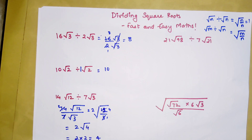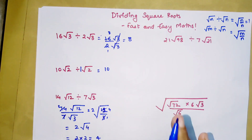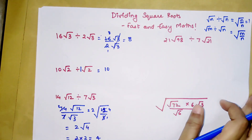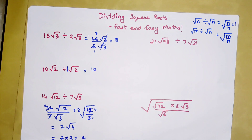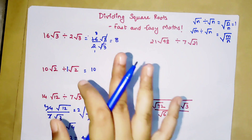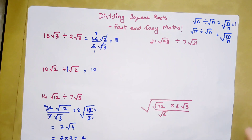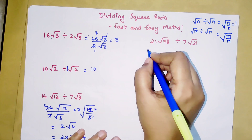If you like the way I am explaining, please hit the like button — it gives me a tremendous amount of encouragement. Also, remember when we were doing multiplication with square roots we were writing answers in simplest form. Here too, when dividing numbers with square roots, we are going to write our answers in simplest form.